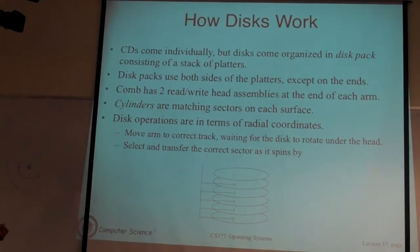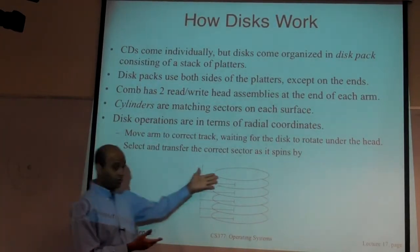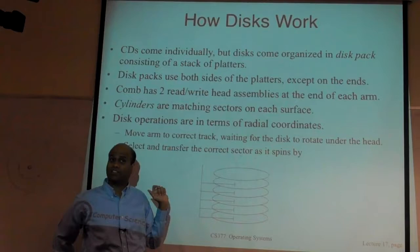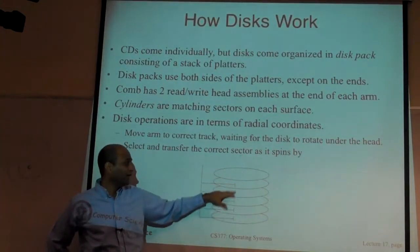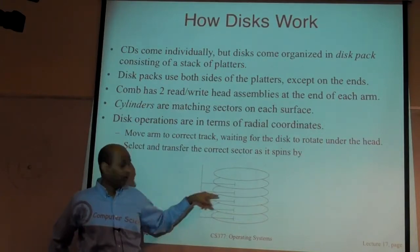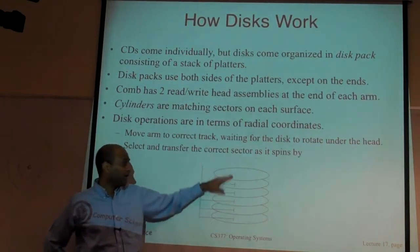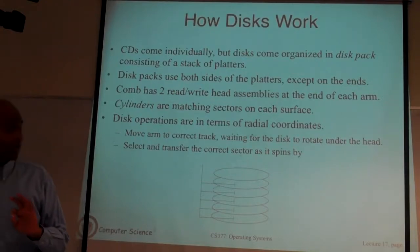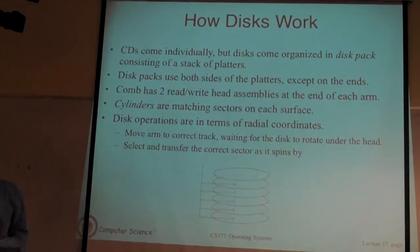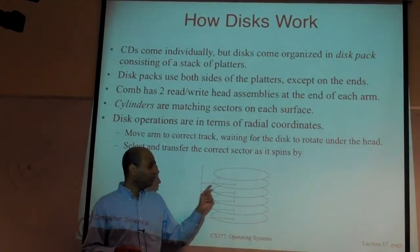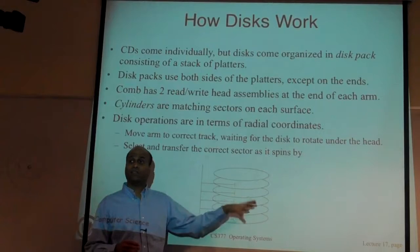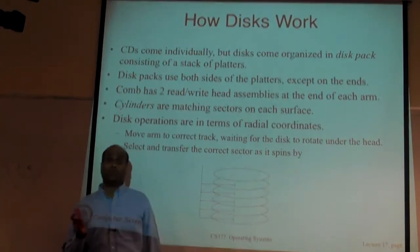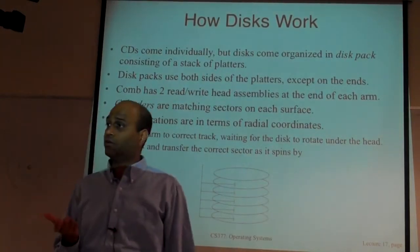Inside the disk you have a sequence of platters, one head per platter. All platters spin simultaneously and at any given time you can read or write from one platter. You pick platter I, track J, sector K. The way you address a disk IO is: go to platter I, track J, sector K.